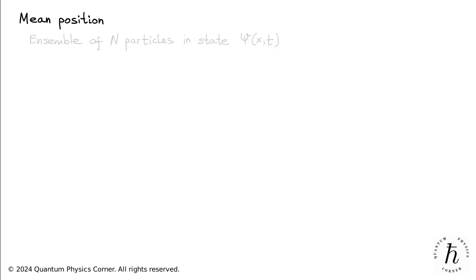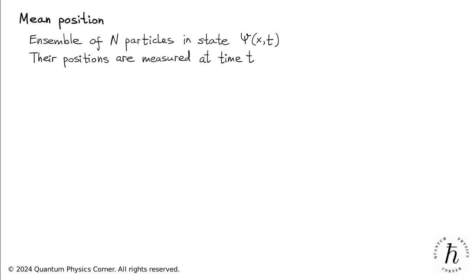Let's consider the following scenario: suppose we have an ensemble of N identical one-particle systems, each described by the same wave function psi. In the discussion to follow, we'll assume N to be very large, tending to infinity. At a given time t, we measure the positions of each of these N particles. According to the Born rule, these measurement outcomes will follow a probability density given by the square of the modulus of the wave function.